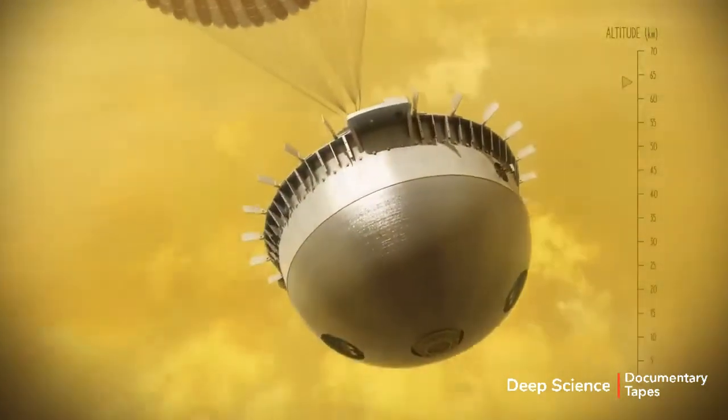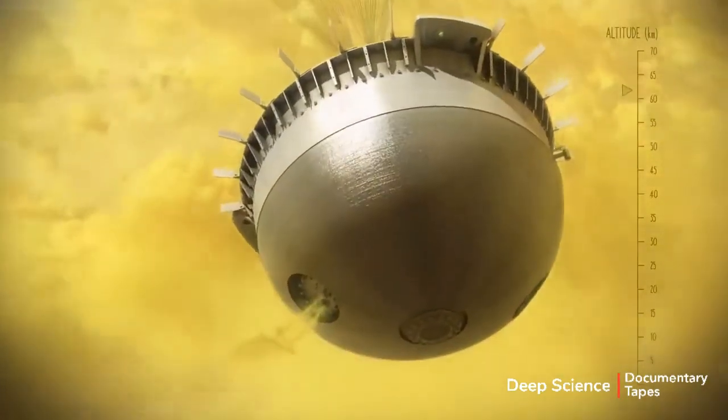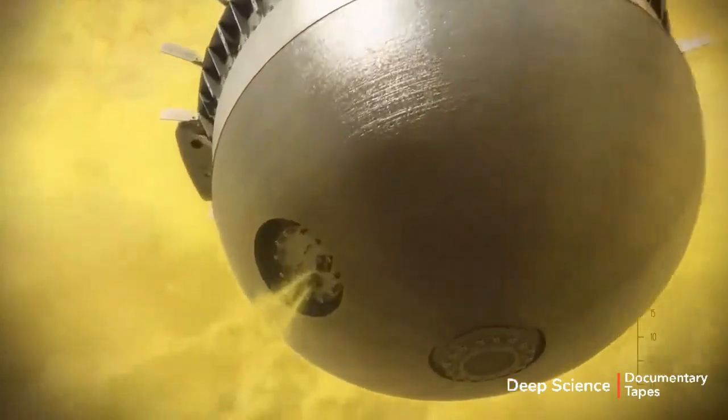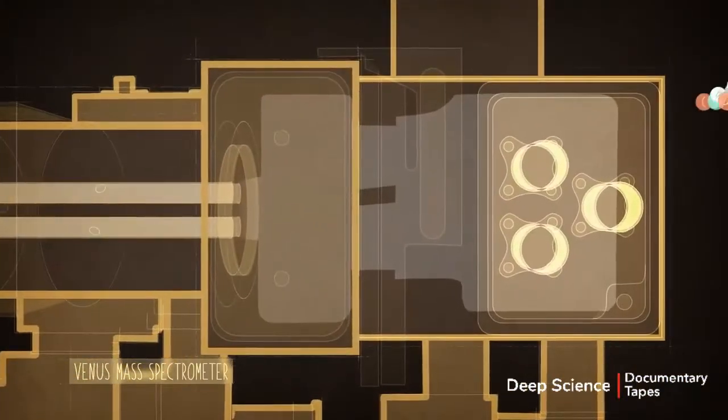The da Vinci probe will measure chemistry, pressure, temperature, and dynamics at least every 200 meters as it descends through Venus's atmosphere to the surface.